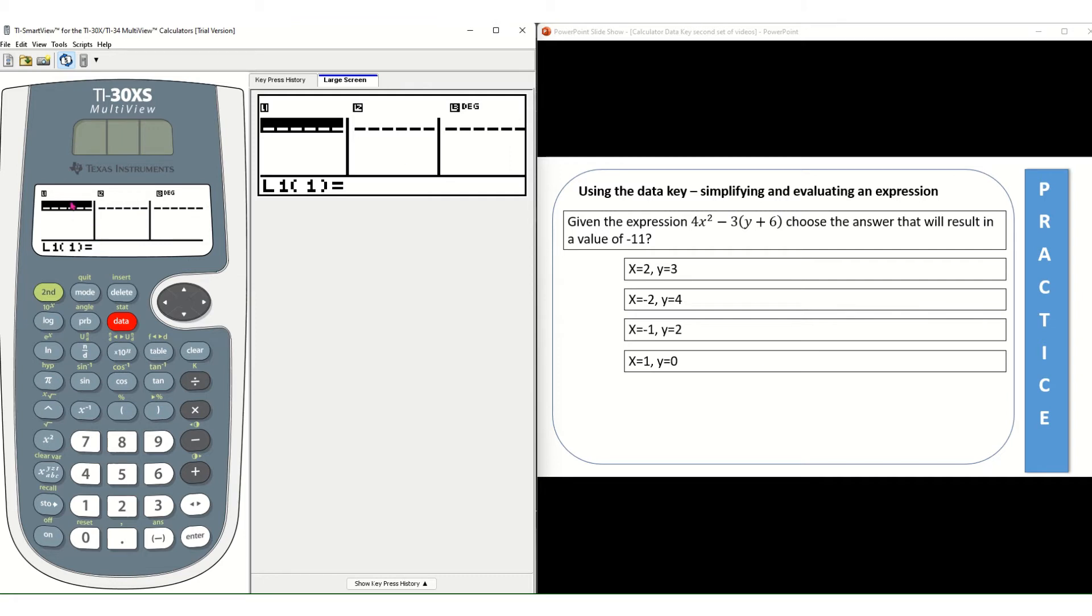So as I mentioned L1 gets all of the x values. So I'm going to enter 2, press enter, negative 2, press enter, negative 1, press enter, and then 1, press enter. Once those values are in there use your arrow key, your right arrow key, to move over to L2.